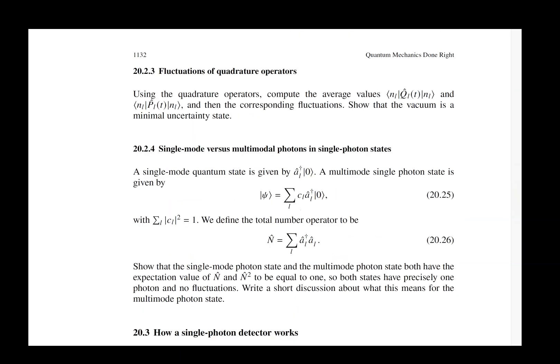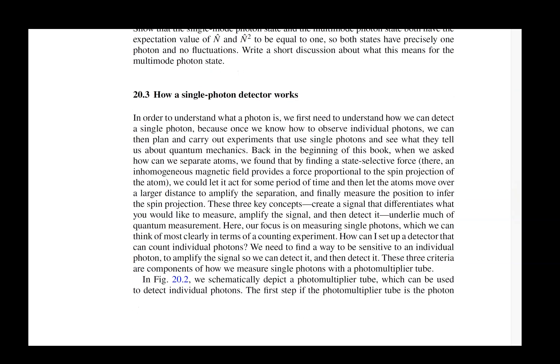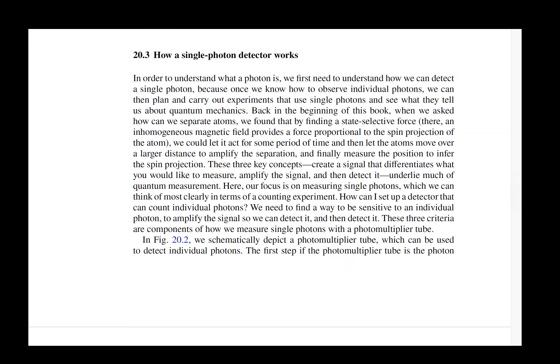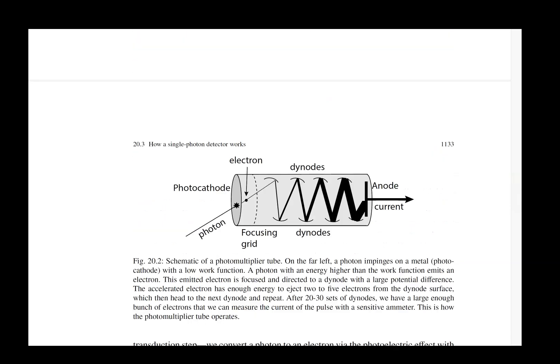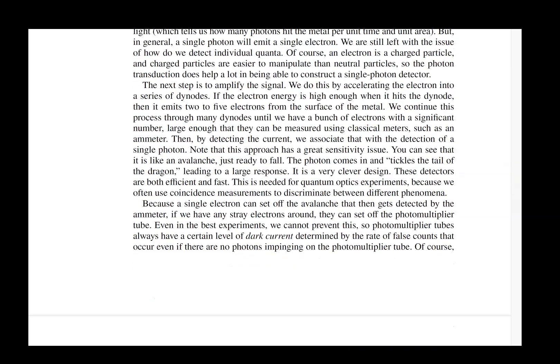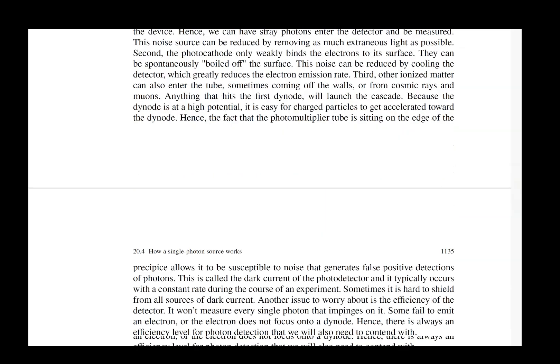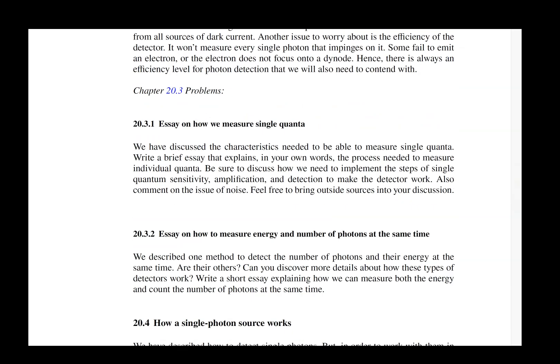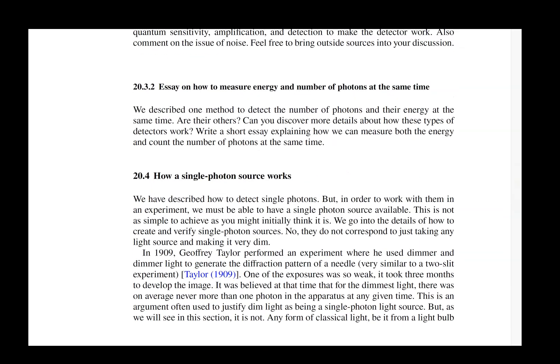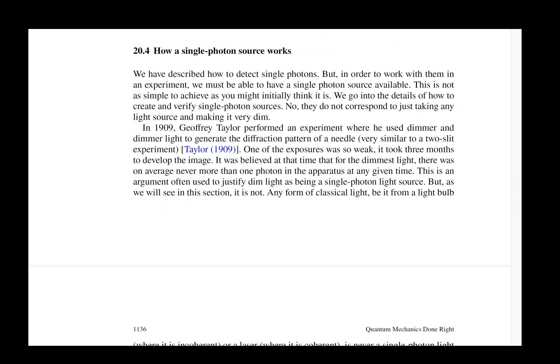We talk about a lot of things. The vacuum has interesting properties to it. Then we move on to looking at how a single photon detector works. The classic example is the photomultiplier tube. There are other kinds of single photon detectors, including ones made out of superconductors.